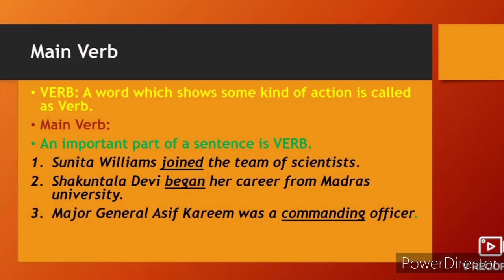A word which shows some kind of action is called a main verb. An important part of a sentence is the verb. Example: Sunita Williams joined this team of scientists — 'joined' is the main verb. Shakuntala Devi began her career from Madras University — 'began' is also a main verb. Major General Asif Karim was a commanding officer — 'was' is a main verb here.